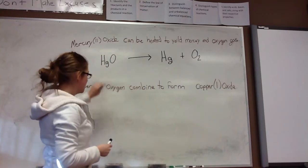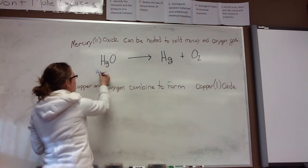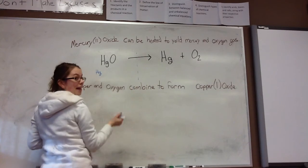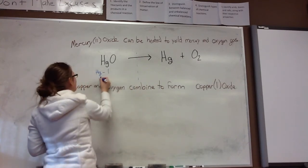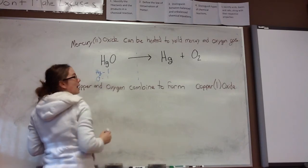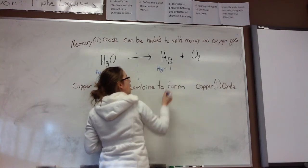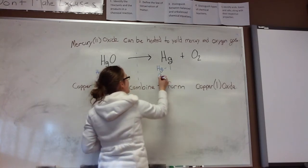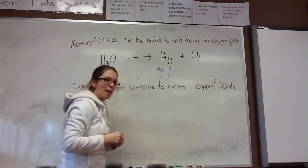It will form mercury and sets of oxygen atoms bonded, O2. Now let's balance it. On this side of the equation, we have one mercury atom and we have one oxygen atom. On this side, we have one mercury atom and two oxygen atoms. That's not balanced.